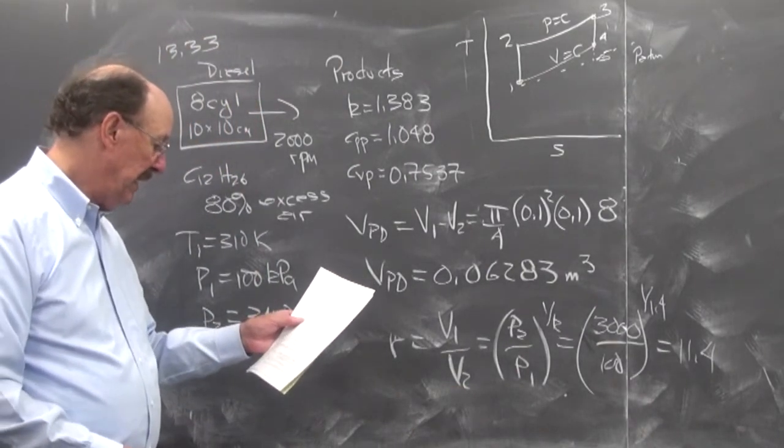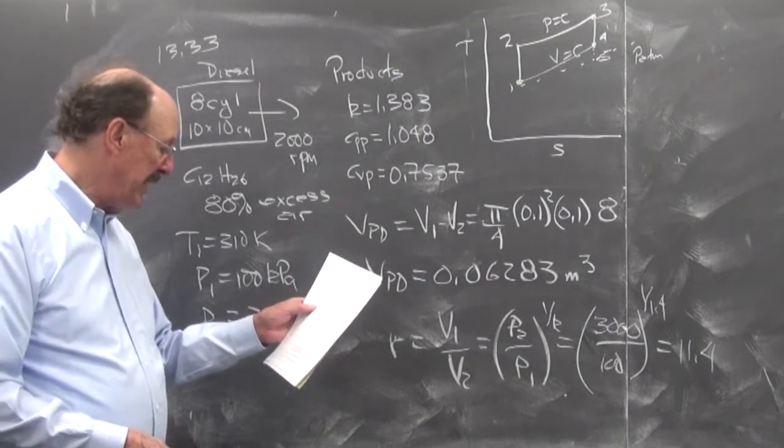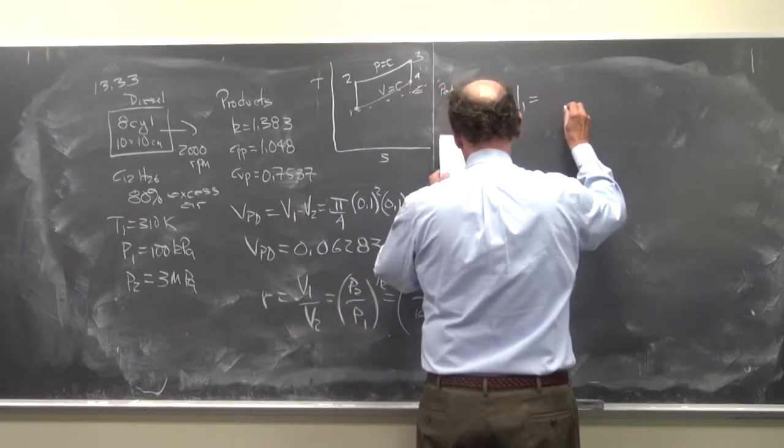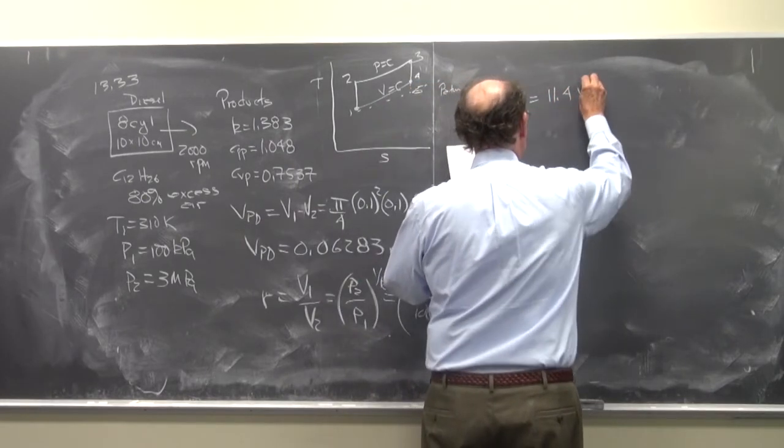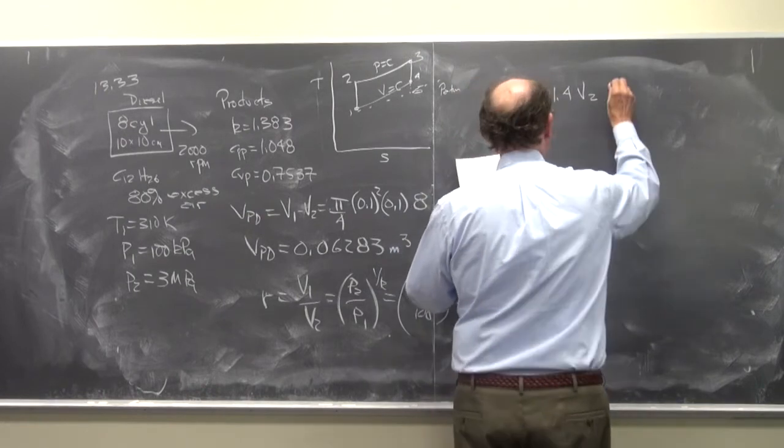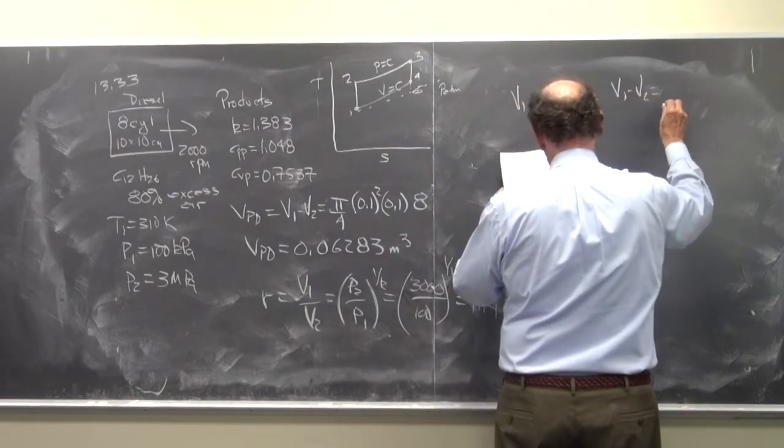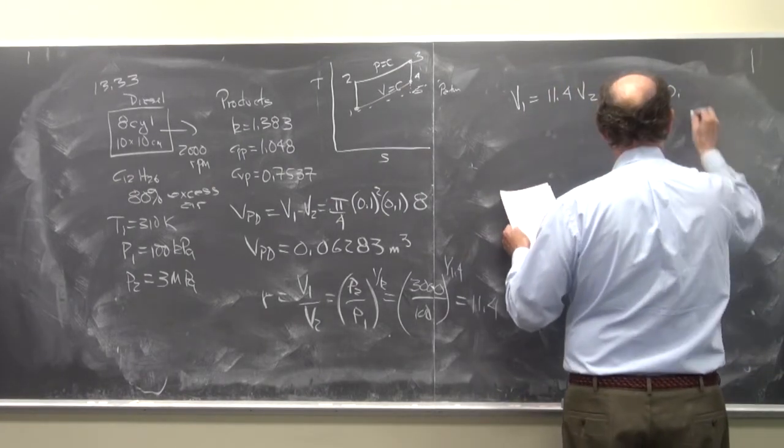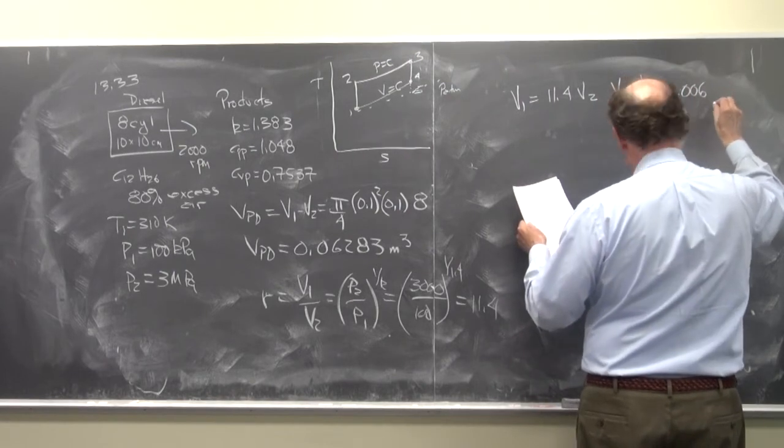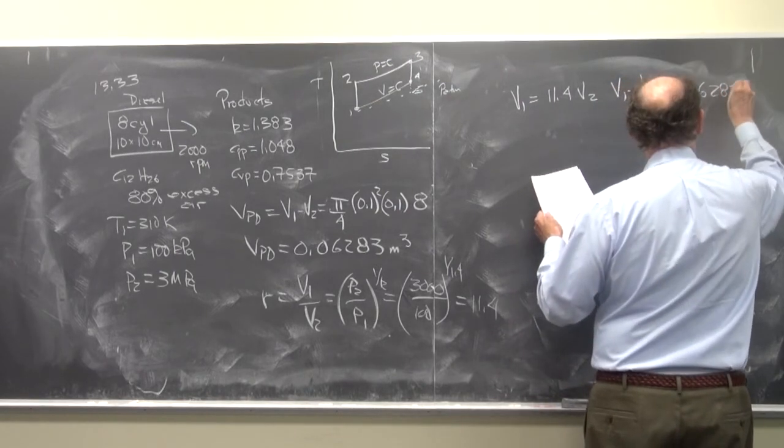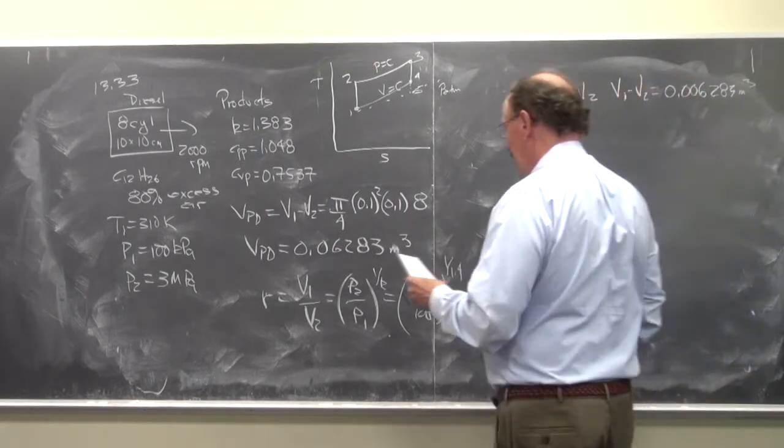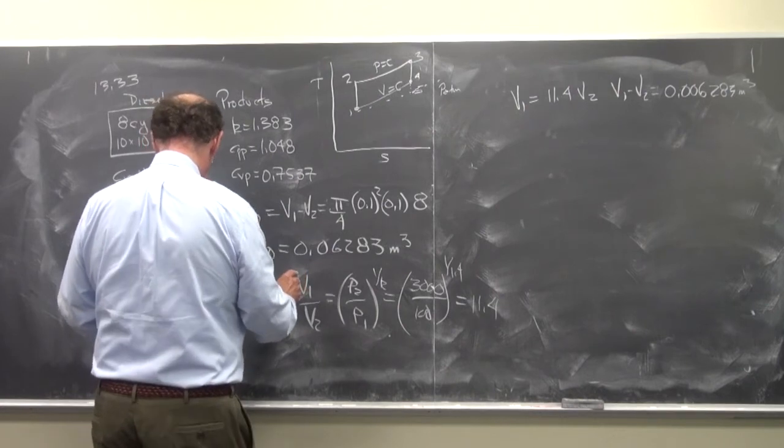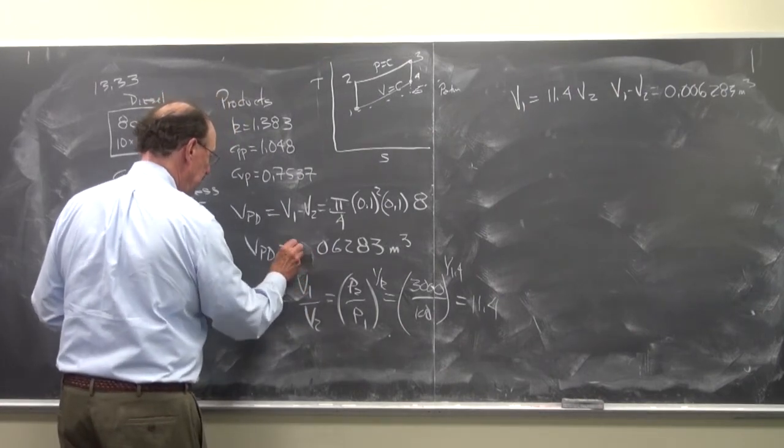So now what we want to be able to do is define V1. So we know that V1 is equal to 11.4 V2. And I know that V1 minus V2 is V sub PD is 0.006283 cubic meters. I think we're missing a 0 over here. I missed the 0, so I'll go back and change it.